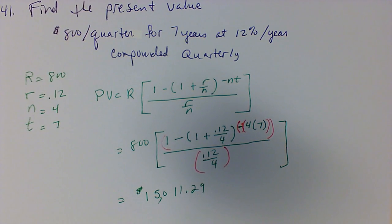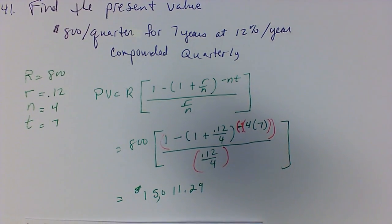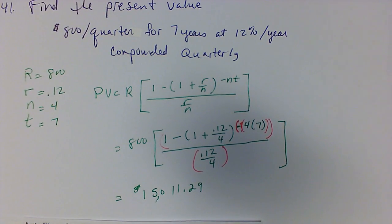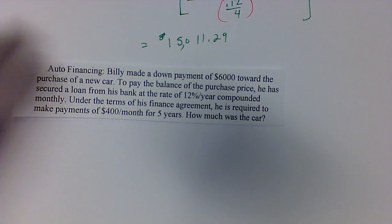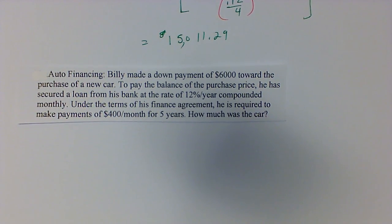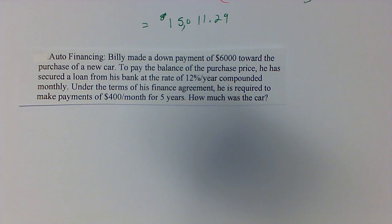Now let's look at doing a word problem that uses present value. Remember that present value is something you use to analyze car loans, house loans and such. We're looking at auto financing where Billy made a down payment of $6,000 toward the purchase of a new car. To pay the balance he has secured a loan from his bank at 12% per year compounded monthly. He is required to make payments of $400 a month for five years. How much was the car?